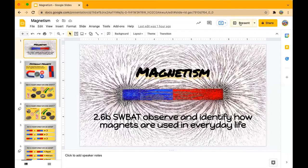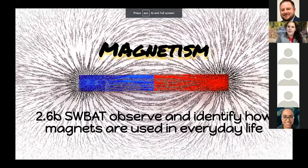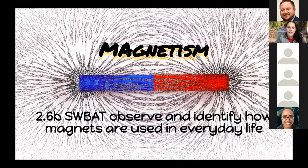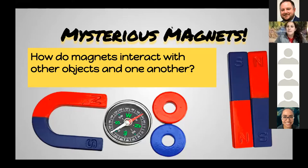Good afternoon, everybody. I'm Ms. Schramm, and I'm going to show you all about magnetism. At the end of my part of the field trip, you'll be able to observe and identify how magnets are used in everyday life. My main question today has two parts: how do magnets interact with other objects, and how do they interact with one another?